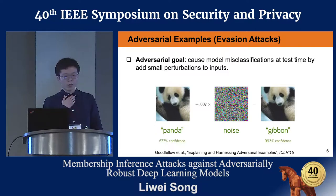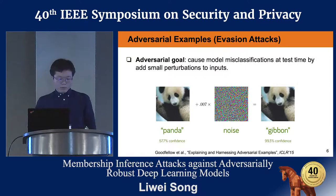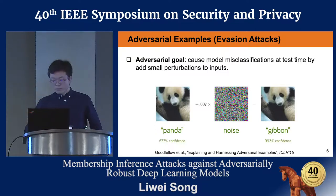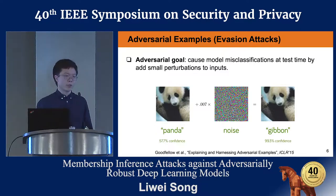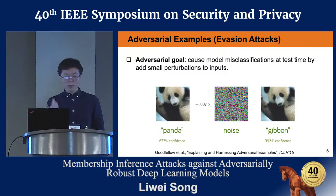Specifically, we measure the membership inference risk of adversarially robust deep learning models. Membership inference is a privacy issue, and adversarially robust models are proposed to defend against adversarial examples, which is a security issue. Now let's briefly discuss both adversarial robustness and membership inference. Adversarial examples, or evasion attacks: the adversary adds a small perturbation to the input such that from the human perspective it still looks like the benign input, but the model gives a wrong prediction.